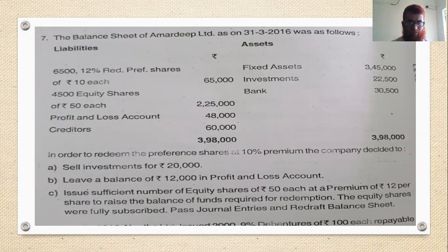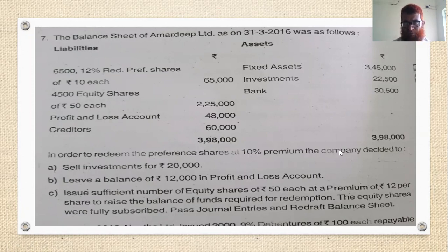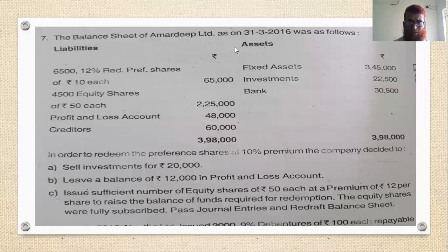In order to redeem the preference shares at a 10% premium: we have ₹65,000 preference share capital, so 10% premium means premium is ₹6,500. The company decided to sell investments for ₹20,000. The investment book value is ₹22,500, and it is sold for ₹20,000 — meaning ₹2,500 is the loss on sale of investment.